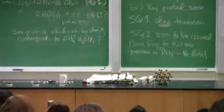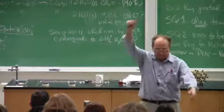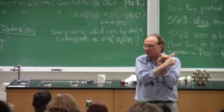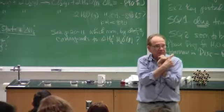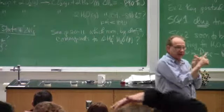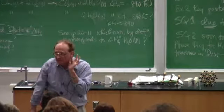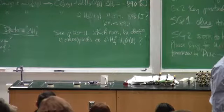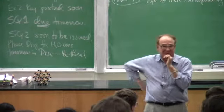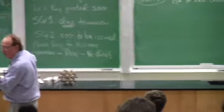Now back to the language: how do we establish the standard state for the possible components of a reaction system? The possible components are liquids—meaning pure liquid, not some ill-defined solution—solids, gases, and the remaining component: aqueous solution species, or solute. So these four entities are the components of a reaction system: solid, liquid, gas, or solute.